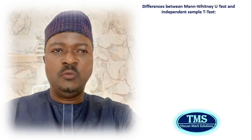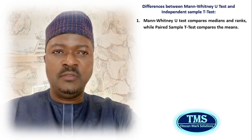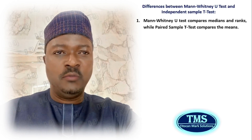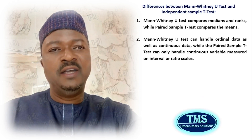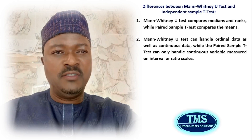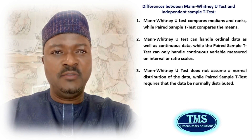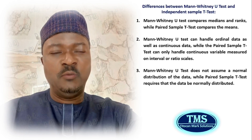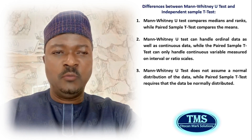The Mann-Whitney U-Test approach to data analysis differs from the independent sample t-test as follows: Mann-Whitney U-Test compares medians and ranks, while the t-test compares means. Mann-Whitney U-Test can handle ordinal as well as continuous data, while the t-test can only handle continuous variables on interval or ratio scales. And Mann-Whitney U-Test does not assume a normal distribution, while the t-test requires normally distributed data.